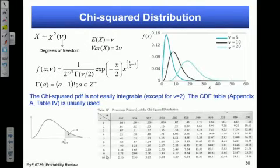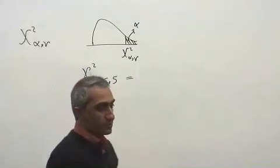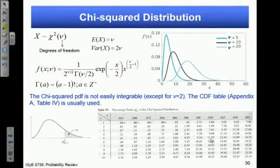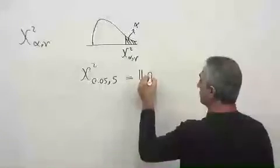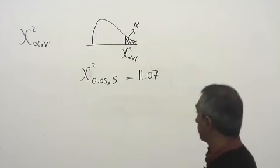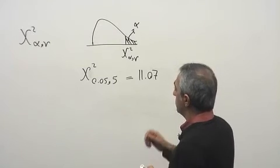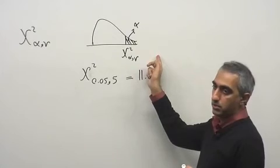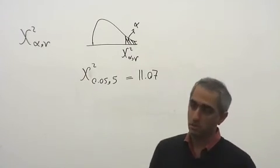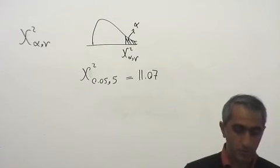For example, chi-square of 0.05 and 5 degrees of freedom: go to the table, find column 0.05 and row 5 degrees of freedom — that gives 11.07. By definition, chi-square sub alpha always refers to right-hand side probability, so it's always greater than. We don't need to specify left or right — it's always right.